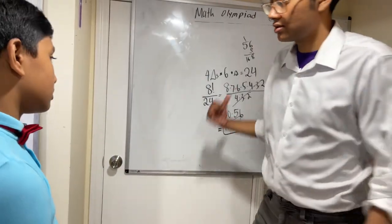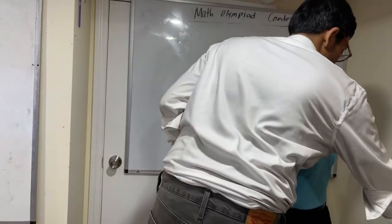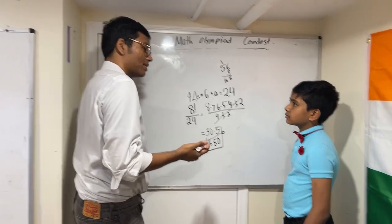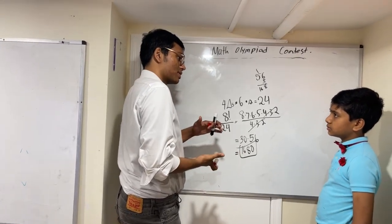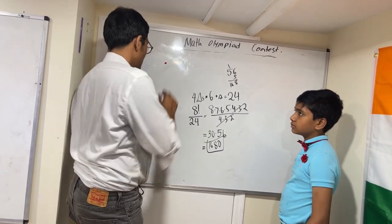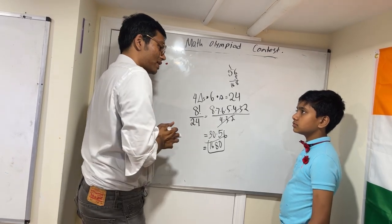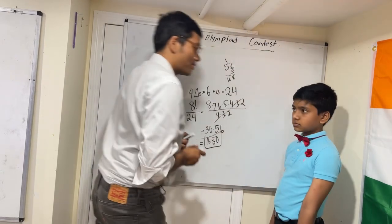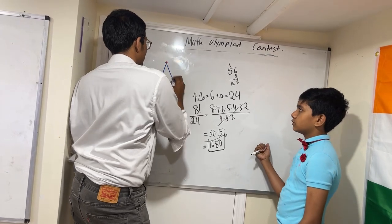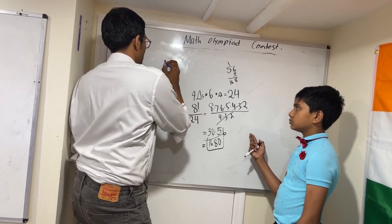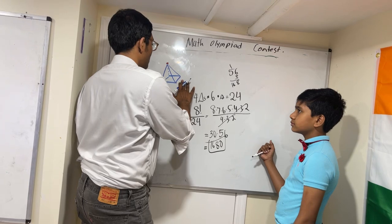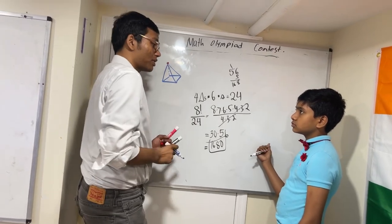One goes one corner, other goes other corner. So, how does an octahedron look like? Two square pyramids. Let's say you put a vertex here — to that vertex you can attach how many triangles? Four. So let's put those four: one, two, three, four. Those are the four triangles we can put around that vertex.